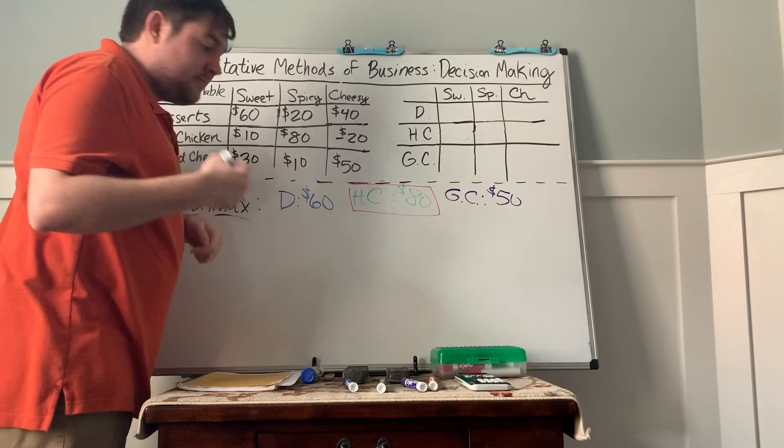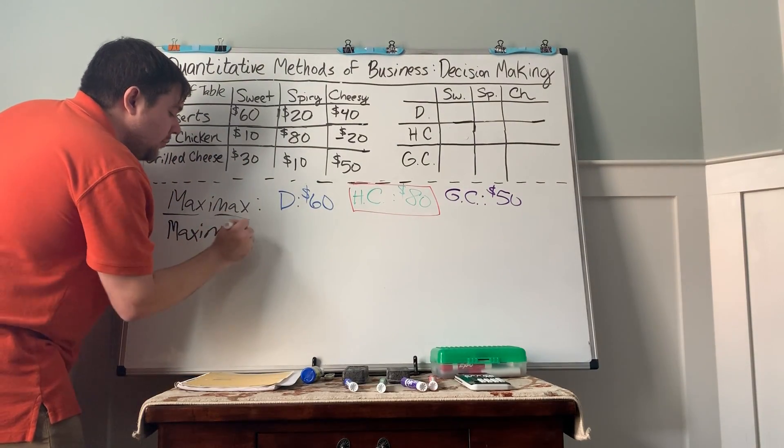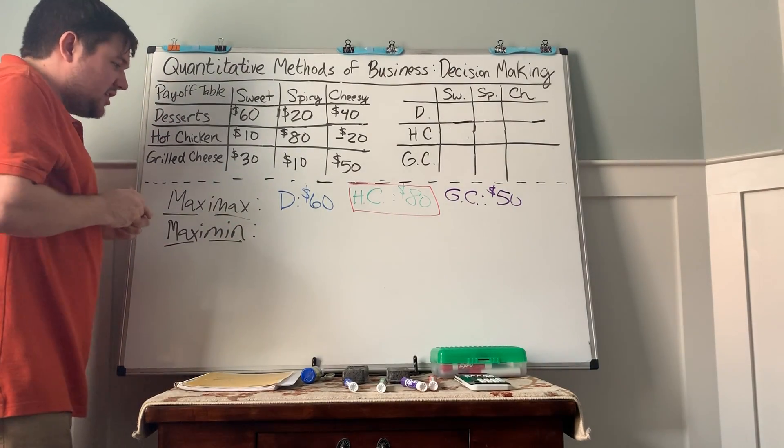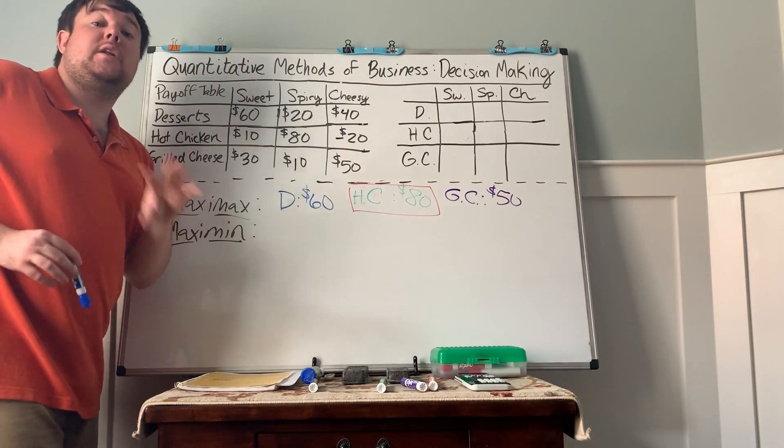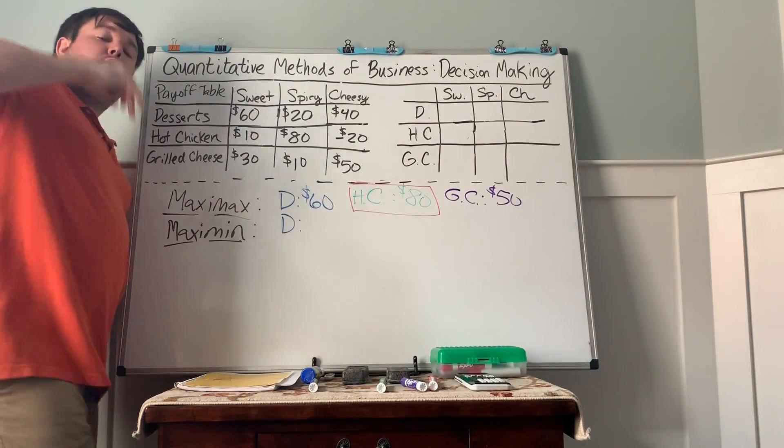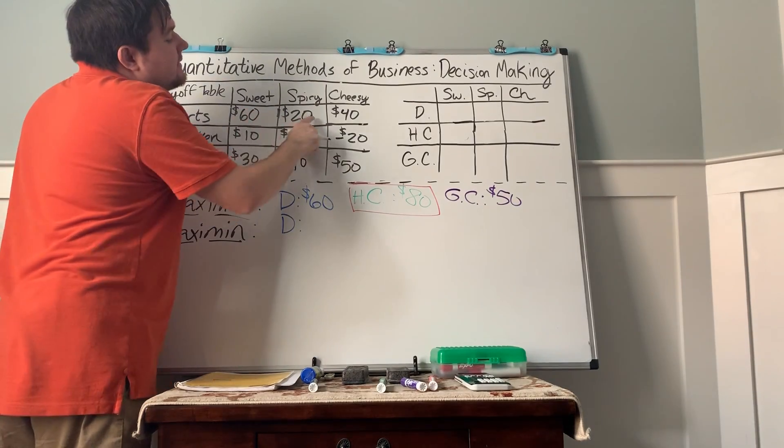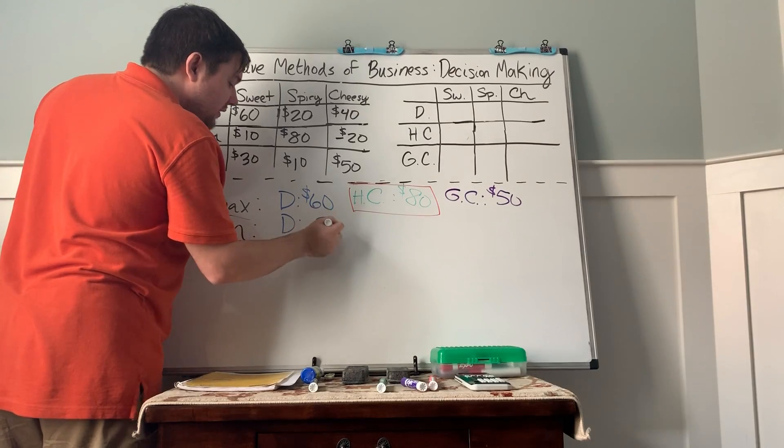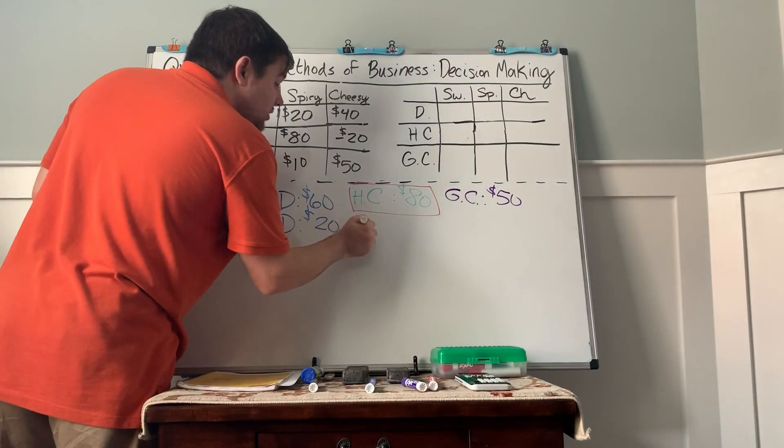So now let's flip it with the maxi-min criteria. In this case, the maximum of the minimums. Just like this one is the most optimistic outlook, this one is going to be the most pessimistic outlook. What is the worst case scenario for desserts? For desserts, we could make 60, 20, 40. Worst case scenario, we're still pulling a profit of $20,000.